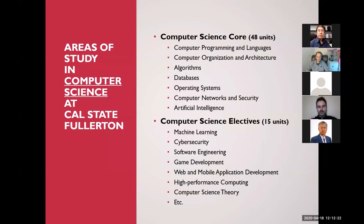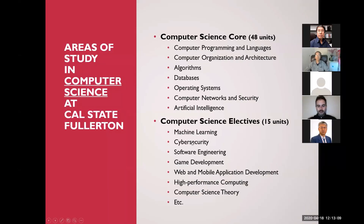The core courses are required for every student, totaling 48 units. Electives are 15 units, meaning students have a choice to pick certain courses in certain areas. The core curriculum covers many sub-areas: computer programming, programming languages, computer organization and architecture, algorithms, databases, operating systems, computer networks and security, and artificial intelligence. Since every CS course is 3 units, 15 units equals about 5 elective courses.